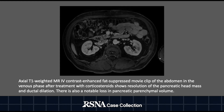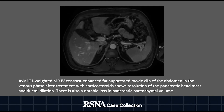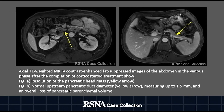Axial T1-weighted, MR IV contrast-enhanced, fat-suppressed movie clip of the abdomen in the venous phase after treatment with corticosteroids shows resolution of the pancreatic head mass, pointed out by the yellow arrow. And in figure B, normal upstream pancreatic duct diameter measuring up to 1.5 mm and an overall loss of pancreatic parenchymal volume.